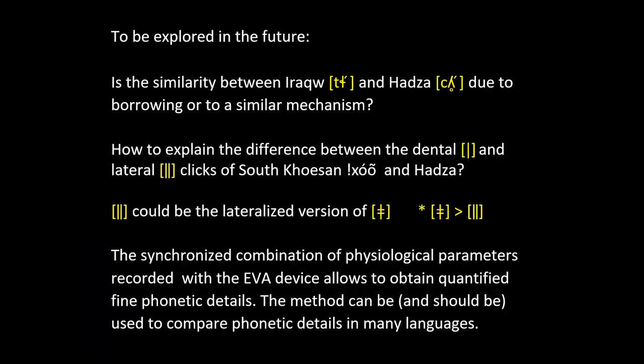To be explored in the future is the similarity between the Iraqw affricated lateral ejective and the Hadza one — due to borrowing or a similar mechanism? This is a very interesting question for historical reasons and for understanding the linguistic contact between the two languages. How to explain the difference between the dental and lateral clicks of southern Khoisan and Hadza: the lateral could be a lateralized version of the palatal click found in southern Khoisan languages, which would explain the difference in acoustic features between the lateral click in southern Khoisan and Hadza.